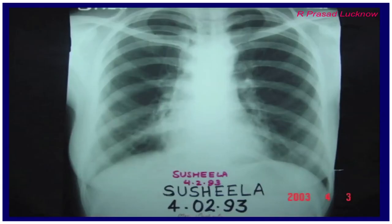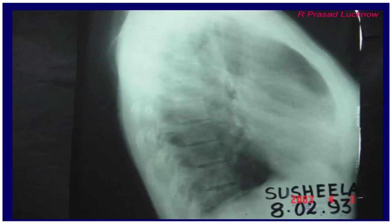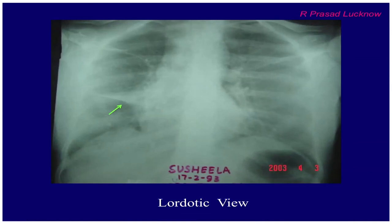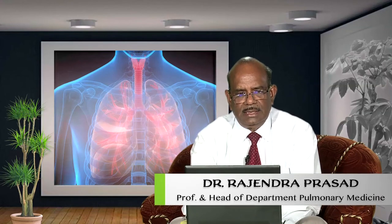Again, a lady came to me in 1993 with recurrent hemoptysis. If you see the X-ray carefully it looks normal, and the lateral view gave no information — even the lateral view appears normal. When I did the lordotic view, you can see the clavicle has gone out of the field and there is a triangular shadow in the paracardiac area — the textbook picture of middle lobe collapse. As I said in my first lecture, middle lobe collapse may not be visible in chest X-ray PA view or even lateral view, but it can be visible in the lordotic view, and of course in CT scan.